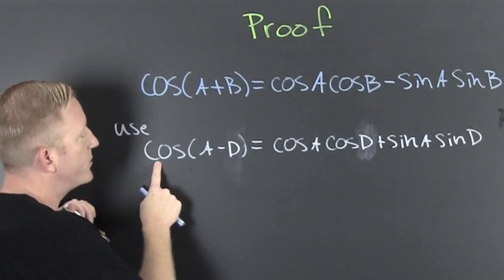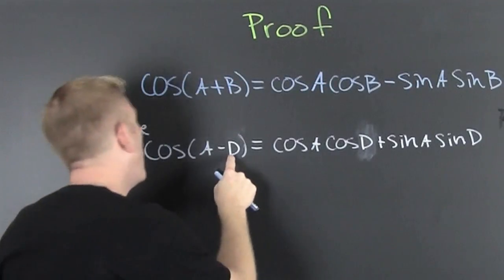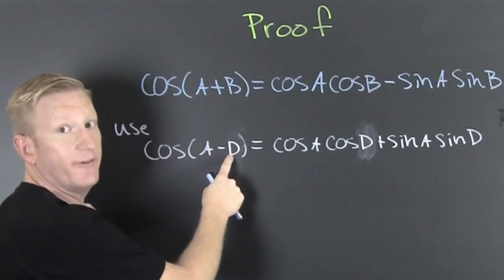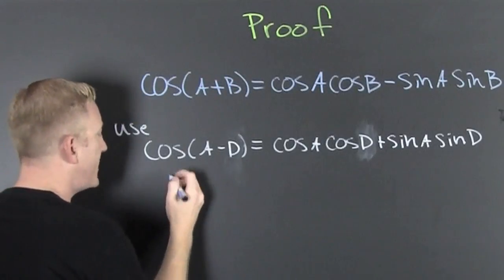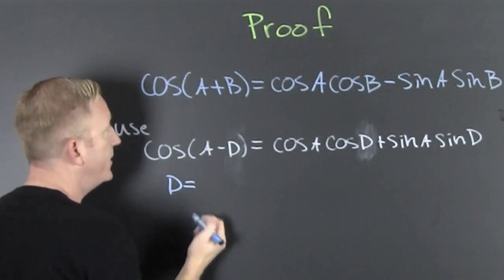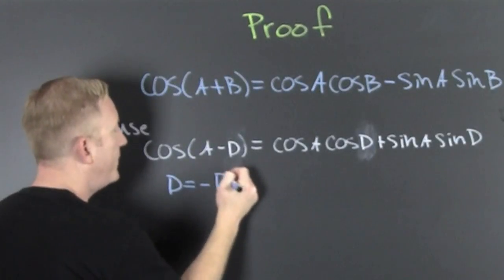Now, I'm using the cosine of A minus D. Why am I using D? Because it's a different variable. And I'm going to now define that guy. Let's just say that D is going to be a minus B.